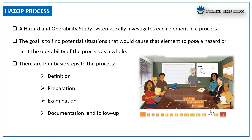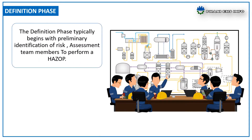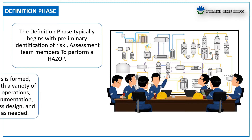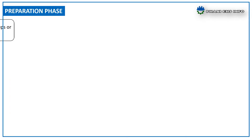The definition phase typically begins with preliminary identification of risk assessment team members. To perform HAZOP, a team of workers is formed including people with a variety of expertise such as operations, maintenance, instrumentation, engineering, process design, and other specialists as needed. The preparation phase typically includes the following activities: the HAZOP team will create a plan to complete the work process.